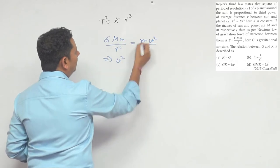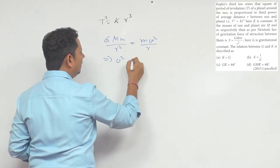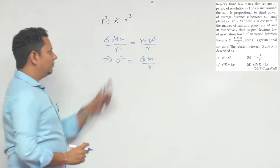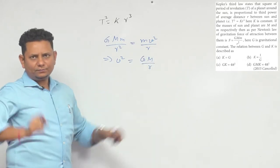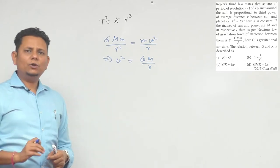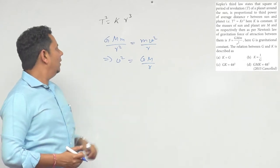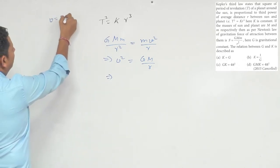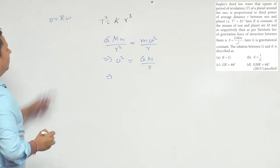View both sides, small m will cancel out. GM/r is equal to v². Now V, we can express in terms of time period.